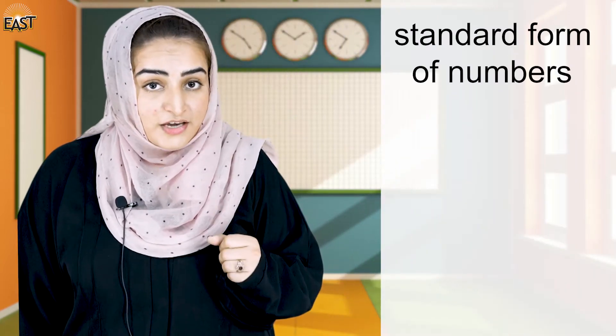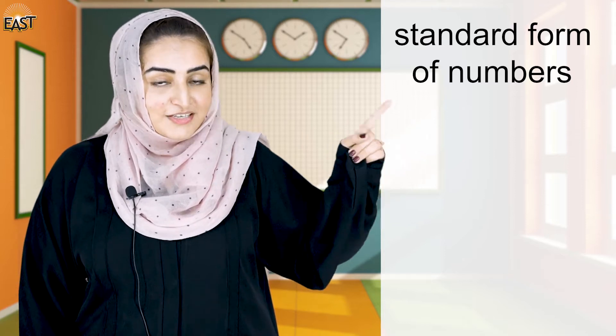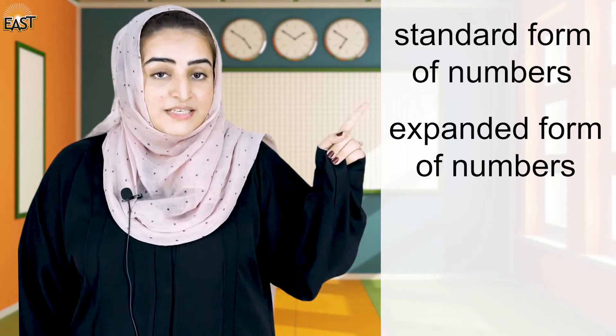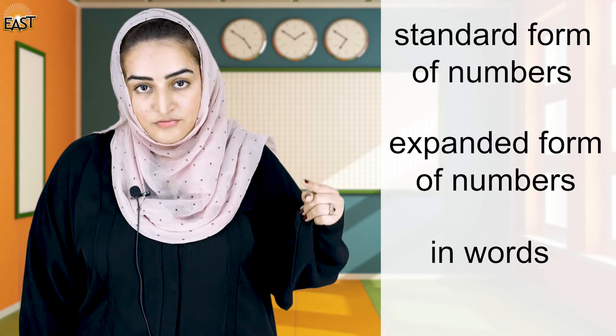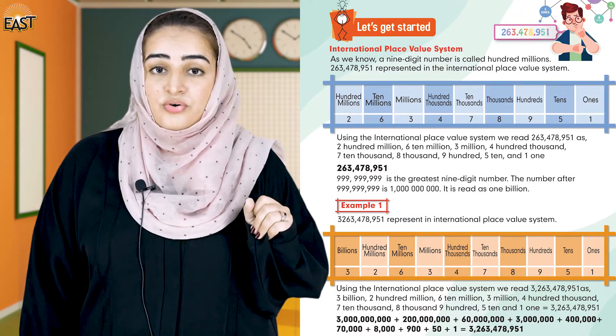We should remember this very well. In today's Class 5 lesson, we have to know more about place values. We have three kinds of methods to represent our numbers: the first is standard form, the second is expanded form, and the third is word form.